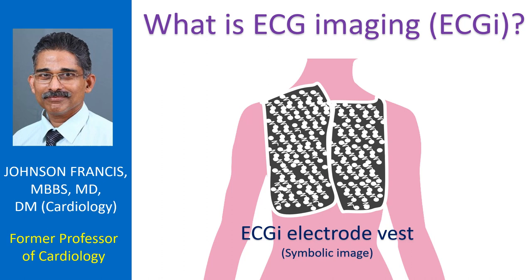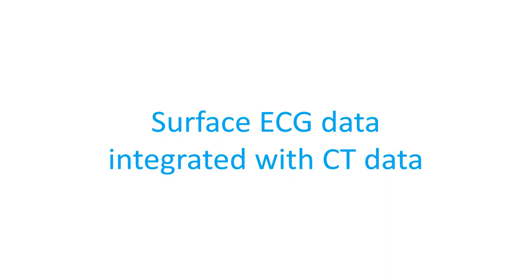The vest has three multi-electrode panels: front left, front right, and back. Connectors from the electrode vest are connected to the Cardio Insight workstation. The chest is shaved and prepared with a non-alcoholic hypoallergenic solution. The front left panel is applied first, followed by the front right and back panels. Panels are secured with medical tape, and a CT scan is done with the vest on.